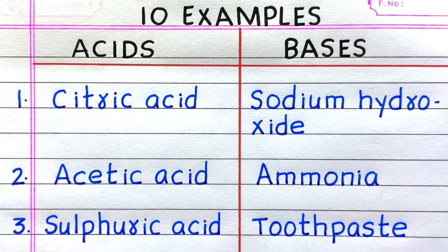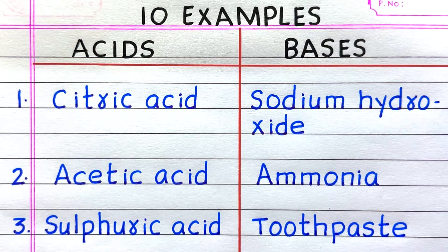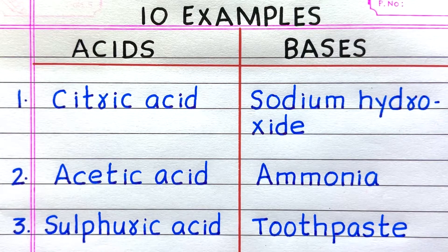First example of an acid is citric acid. Second, acetic acid. Third, sulphuric acid.